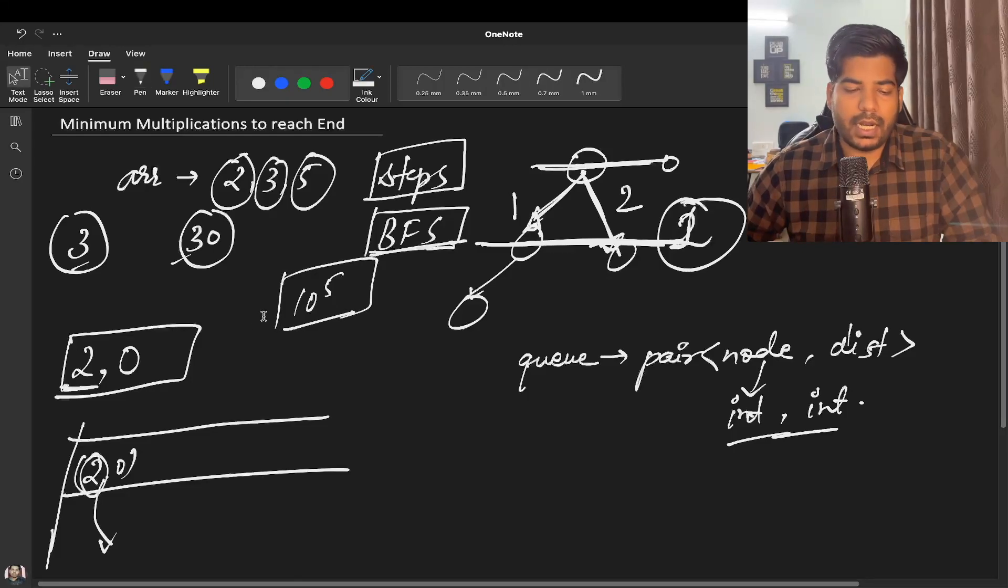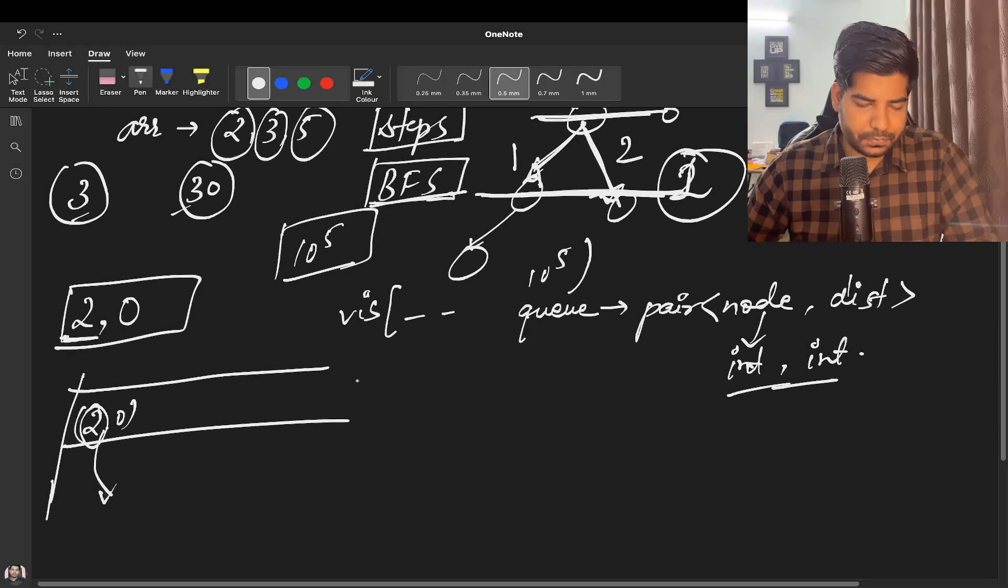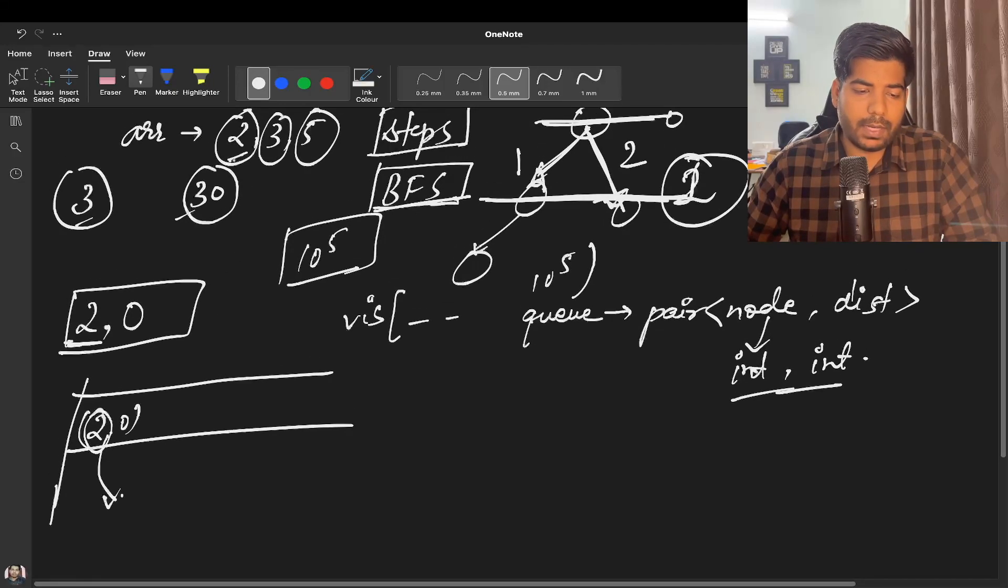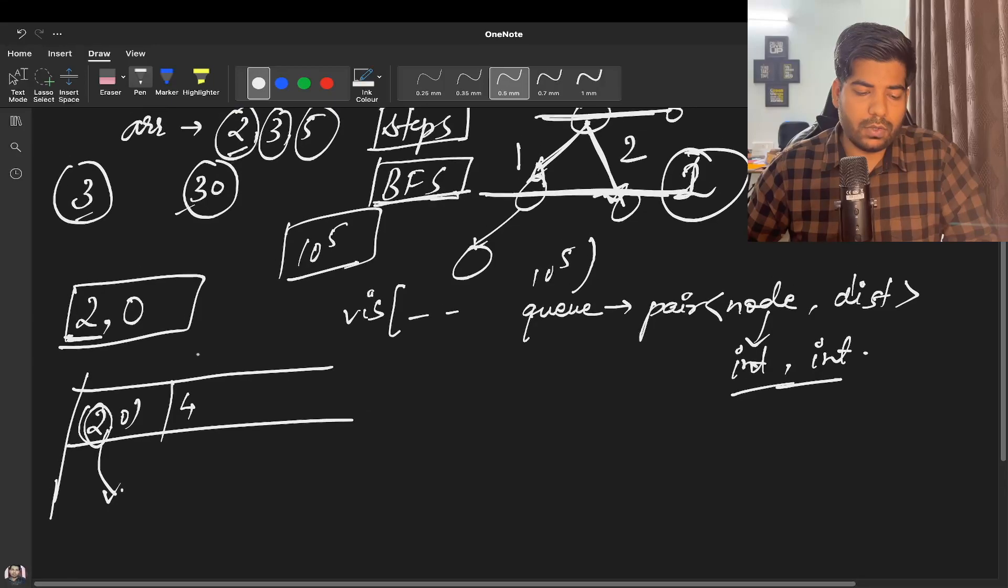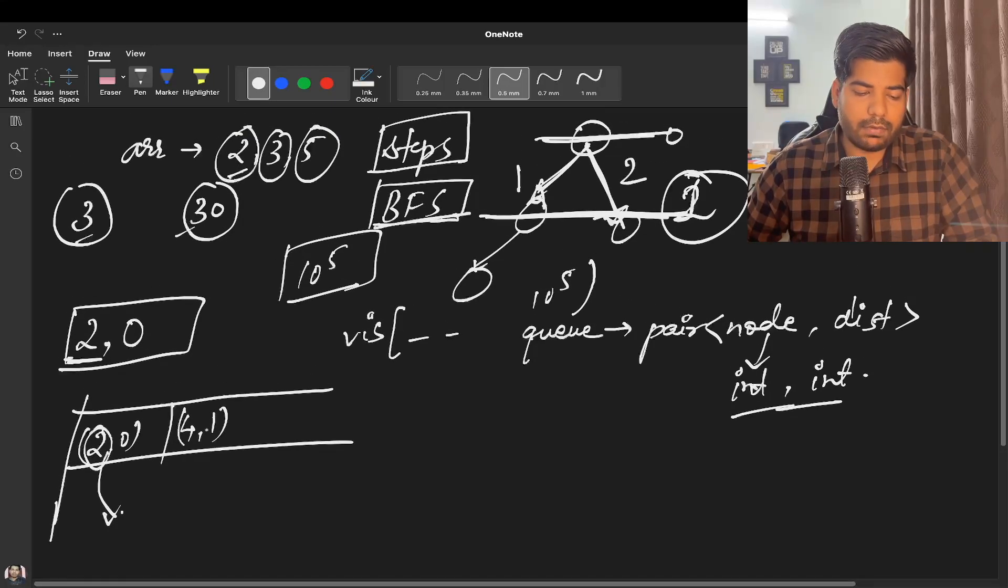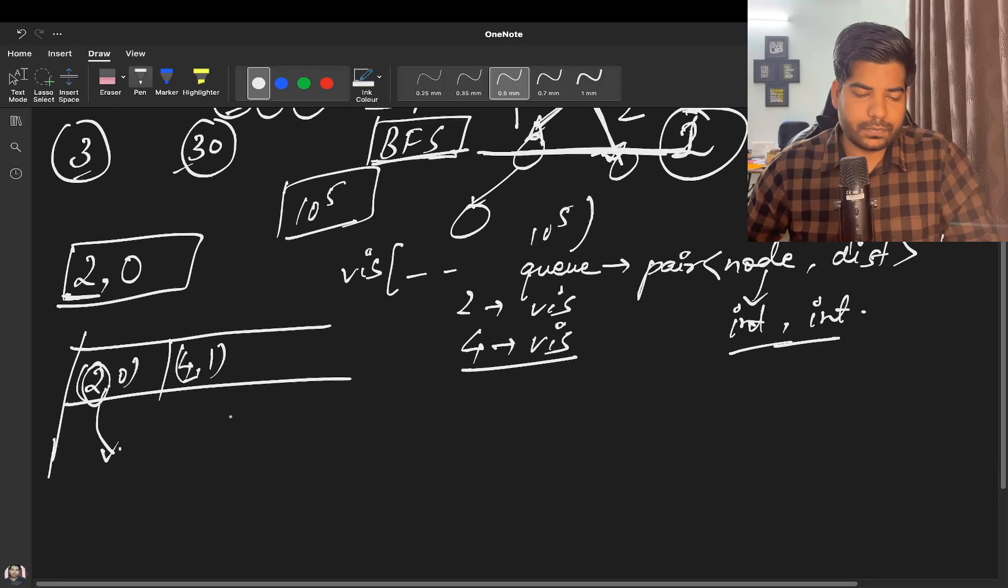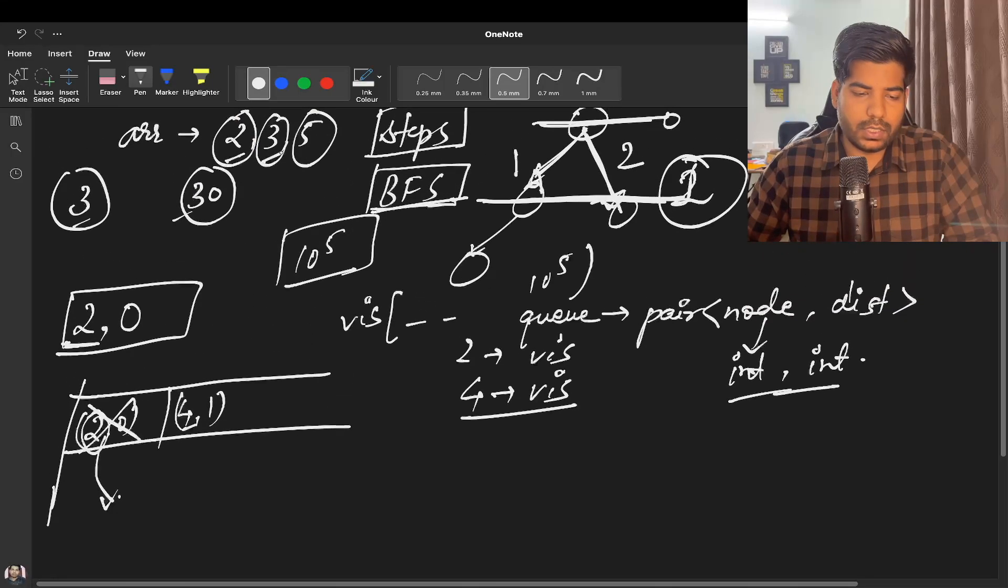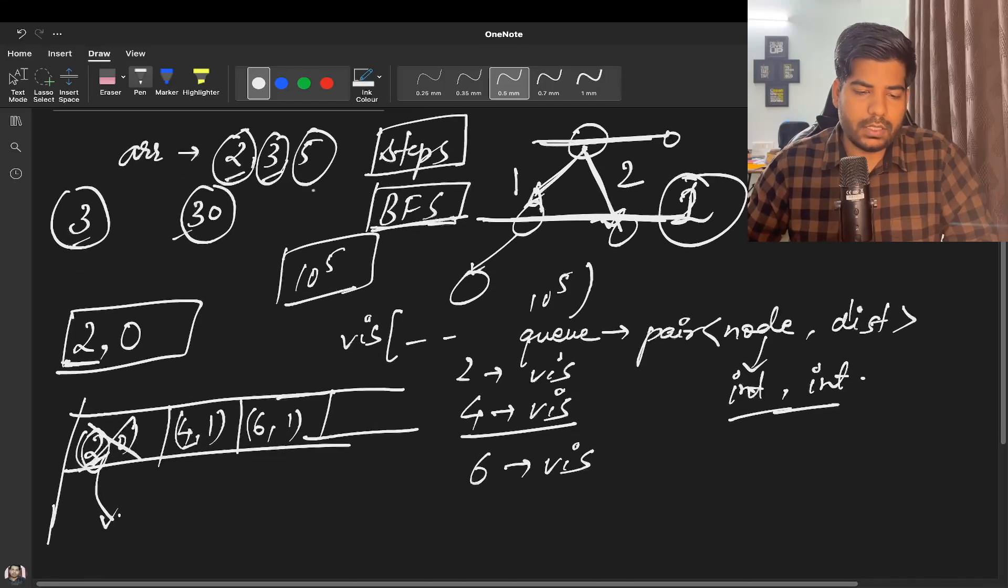That is an indication that my array size cannot be greater than 10 to the power 5. So we can make a visited array of 10 to the power 5 size. Assume it's a visited array of 10 to the power 5 size. Now when we take this out, we will multiply this with 2, we get 4. But now getting to 4 will take step 1, so we will push that in our queue and mark this 4 as visited, since 4 was not visited. So now 4 has been marked as visited, and 2 is also marked as visited.